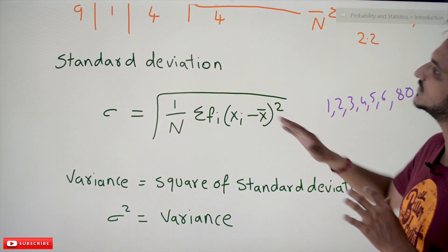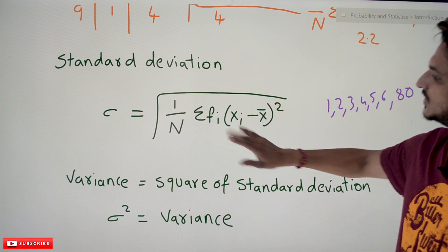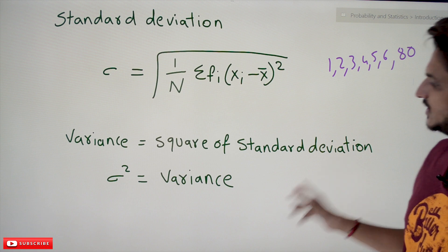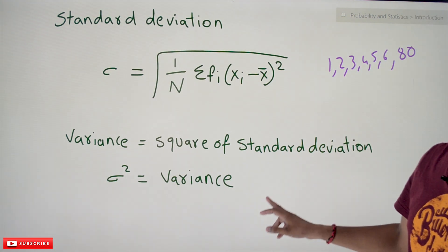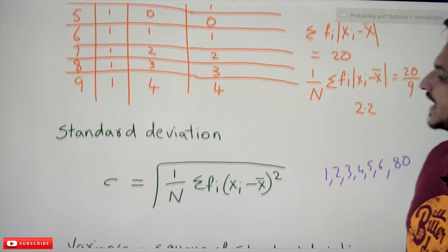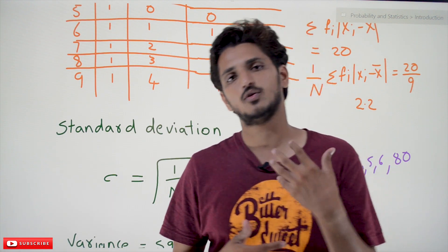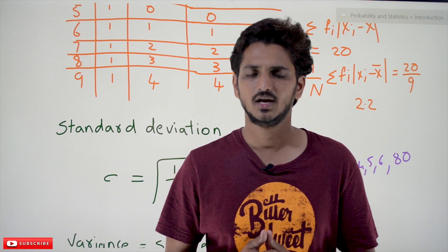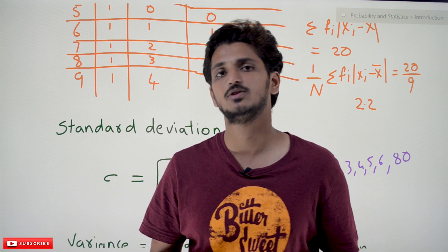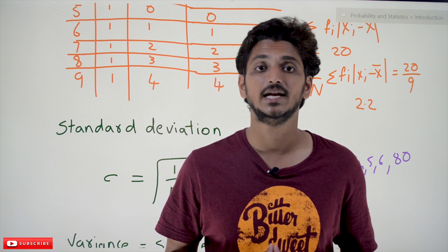So if you have many outlying points, go with mean absolute deviation; otherwise go with standard deviation. Variance is simply the square of the standard deviation: σ² = variance. This is how we find mean absolute deviation, standard deviation, and variance. In our next class we will do practice examples for frequency distributions. If you have any questions, post them in the comments below. Thanks for watching — please subscribe and press the bell icon for the latest updates.